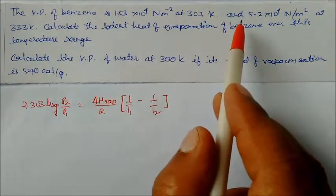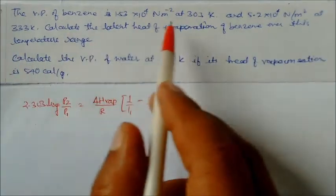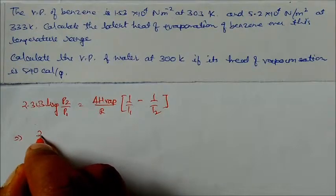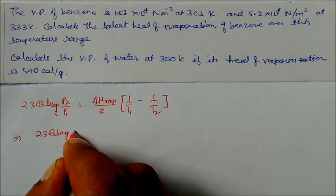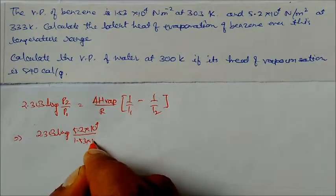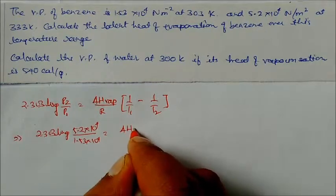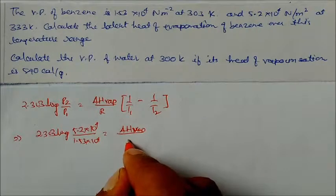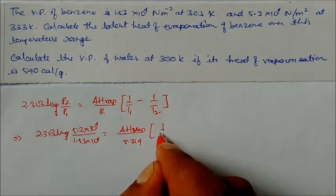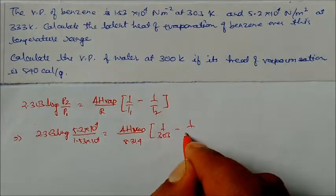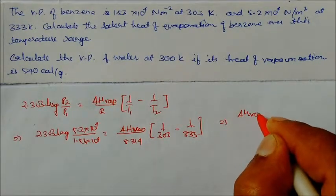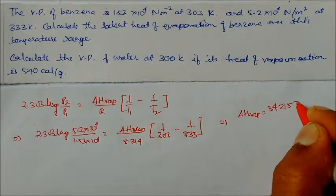Here P1 is 1.53×10⁴ and P2 is 5.20×10⁴. T1 is 303 K (lower temperature) and T2 is 333 K (higher temperature). Substituting: 2.303 × log(5.2×10⁴ / 1.53×10⁴) = ΔHvap / 8.314 × (1/303 − 1/333). Solving, ΔHvap = 34215 J, or 34.215 kJ. This is our answer.